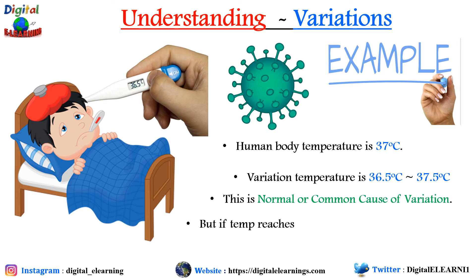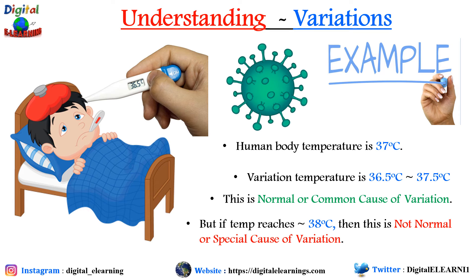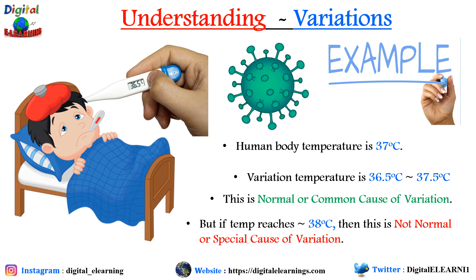But at times your body gets infected with a virus and your body temperature could reach up to 38 degrees centigrade — this is not normal, so this is a special cause of variation. It means something special has happened in your body that is why your temperature is rising. This is uncontrolled or unstable variation due to the special cause, which is the virus, and it can be identified. Now if we remove this special cause — the virus — your body temperature will return to normal behavior.